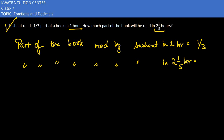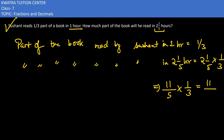This means: if in 1 hour he reads 1/3, how much does he read in 2 1/5 hours? 2 1/5 equals 2 into 5 is 10, plus 1 is 11, so 11/5. Multiplying 11/5 by 1/3: 11 into 1 is 11, and 5 into 3 is 15. So the answer is 11/15.